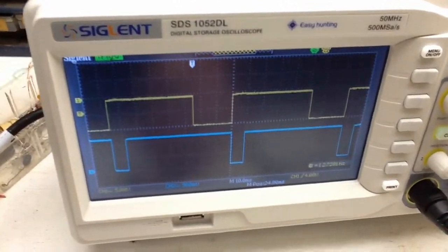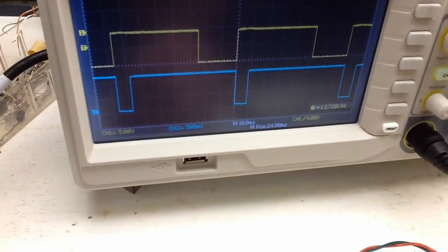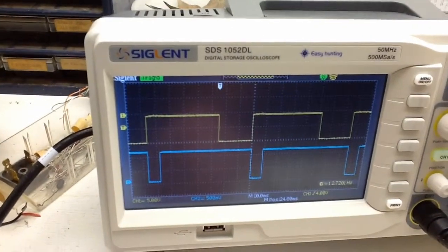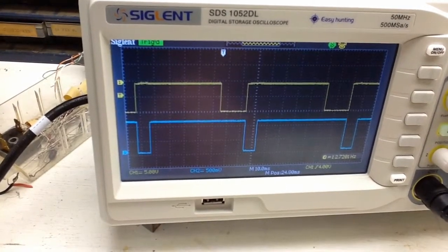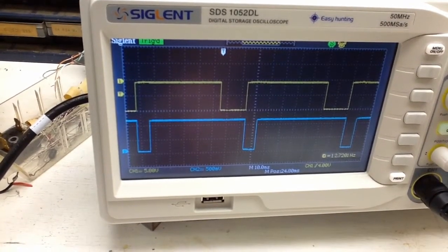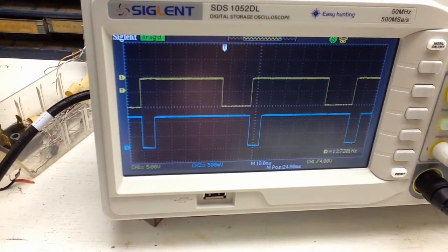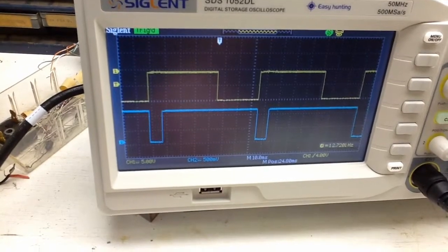So here what I want to do is adjust the on period. Over here I will turn. So here you can see I've turned it so that it has increased the period of time that it's on. And here the total period that it's on has decreased.